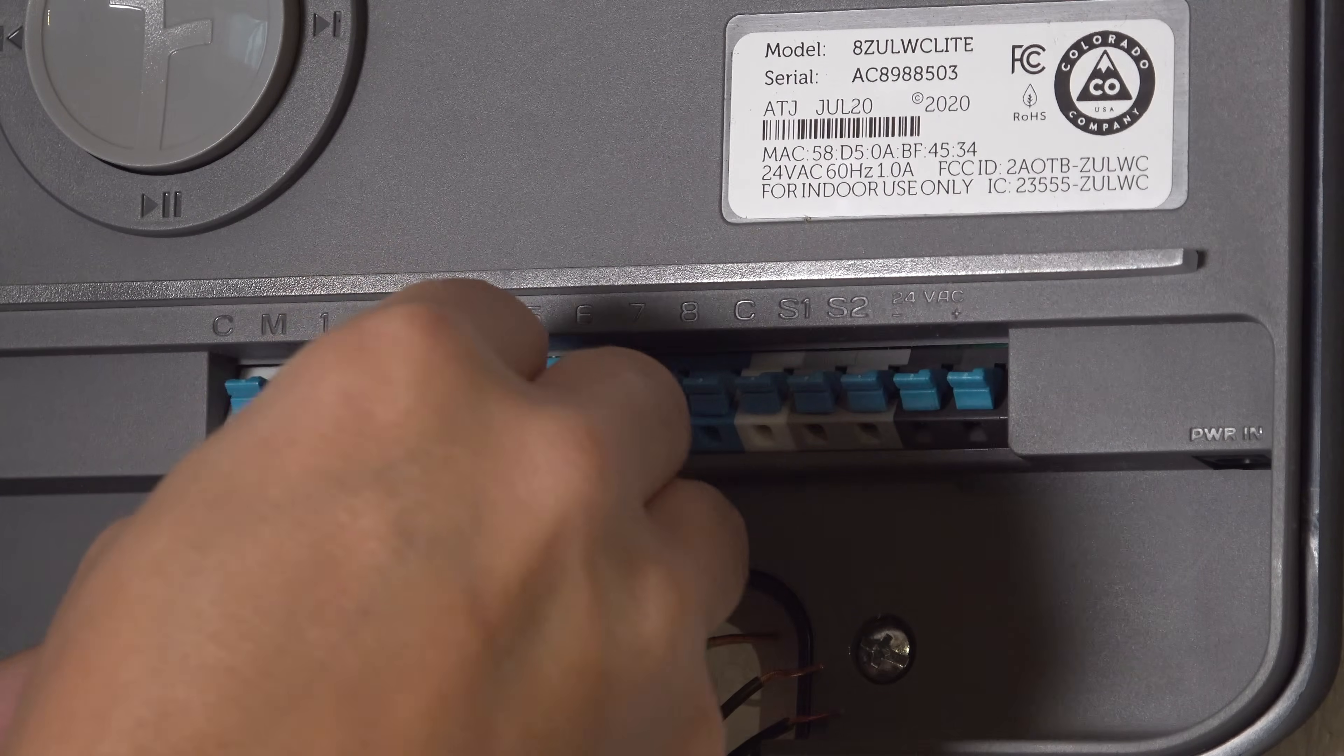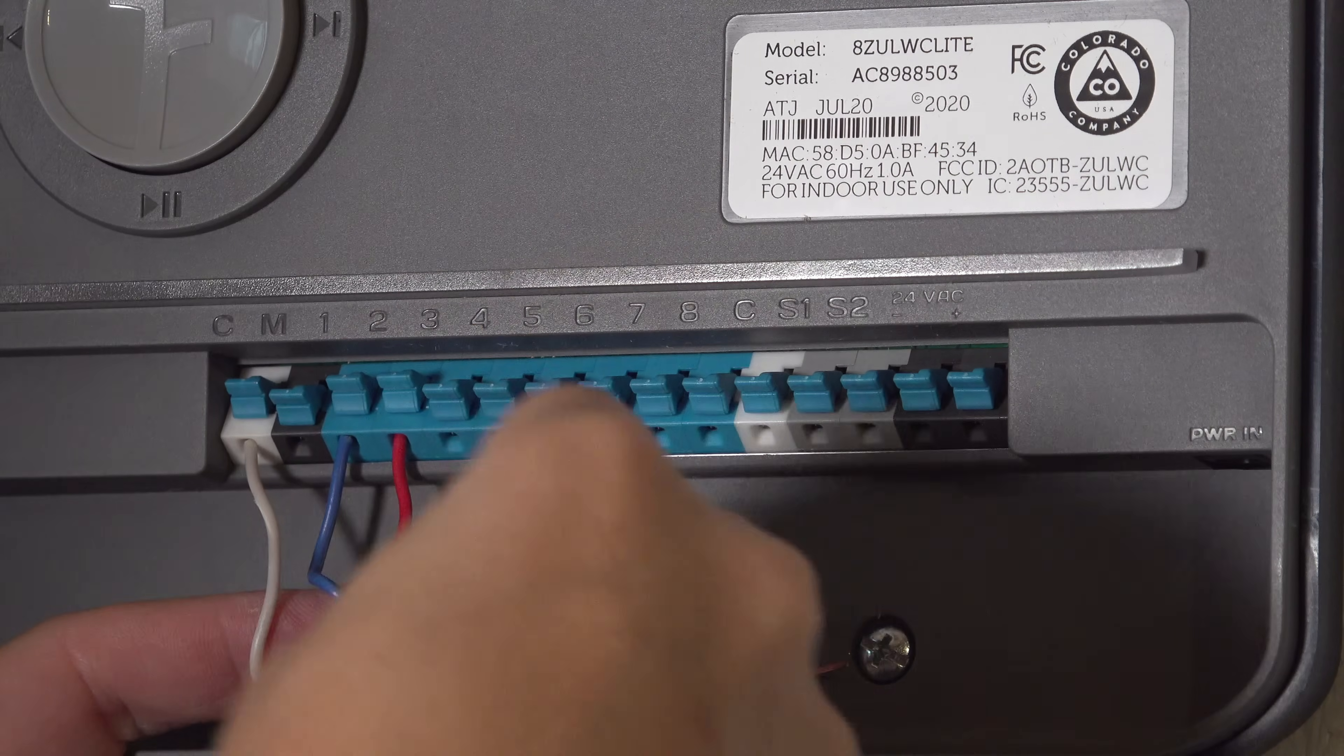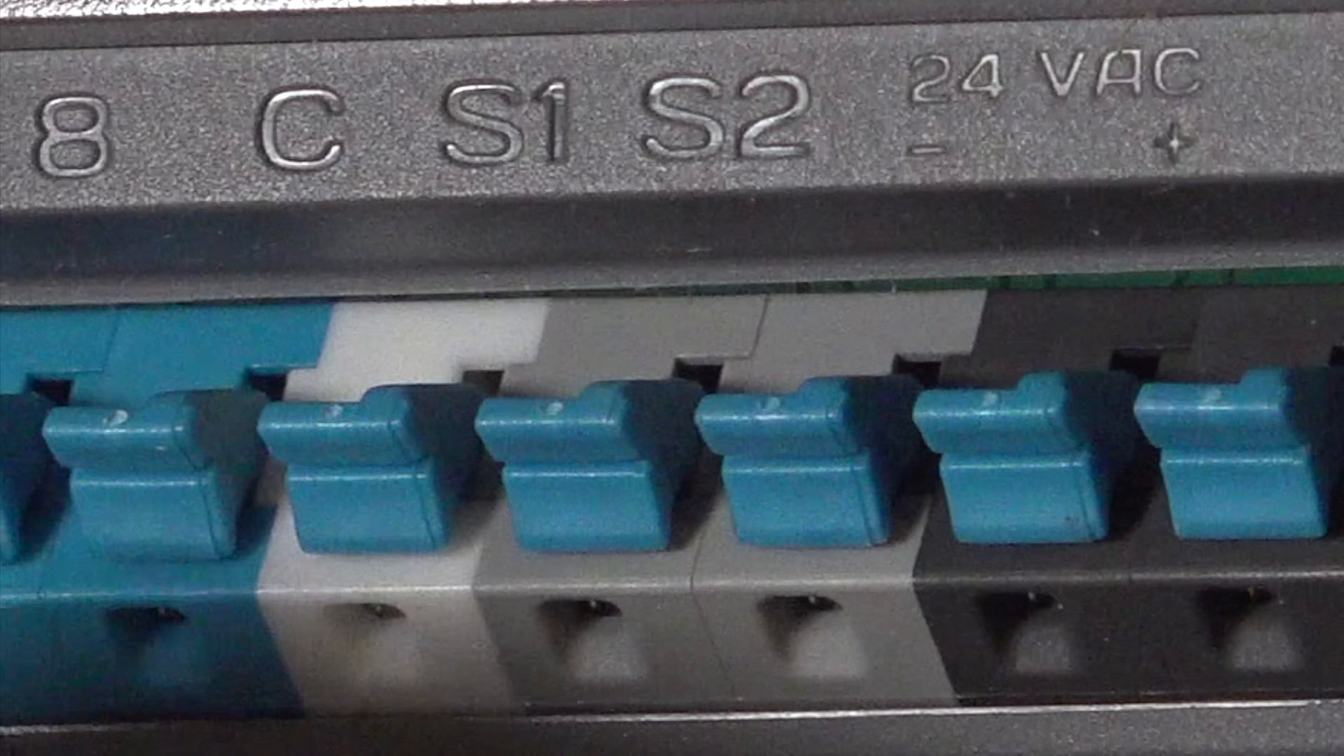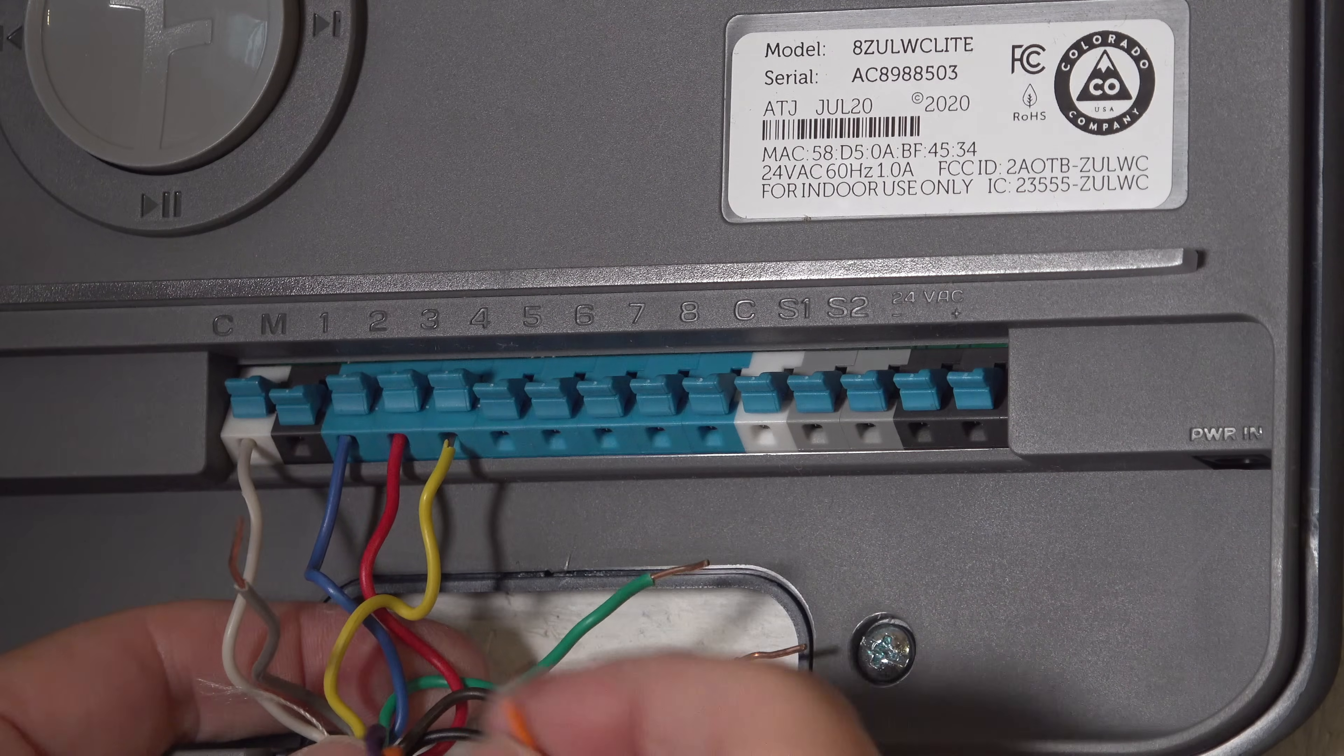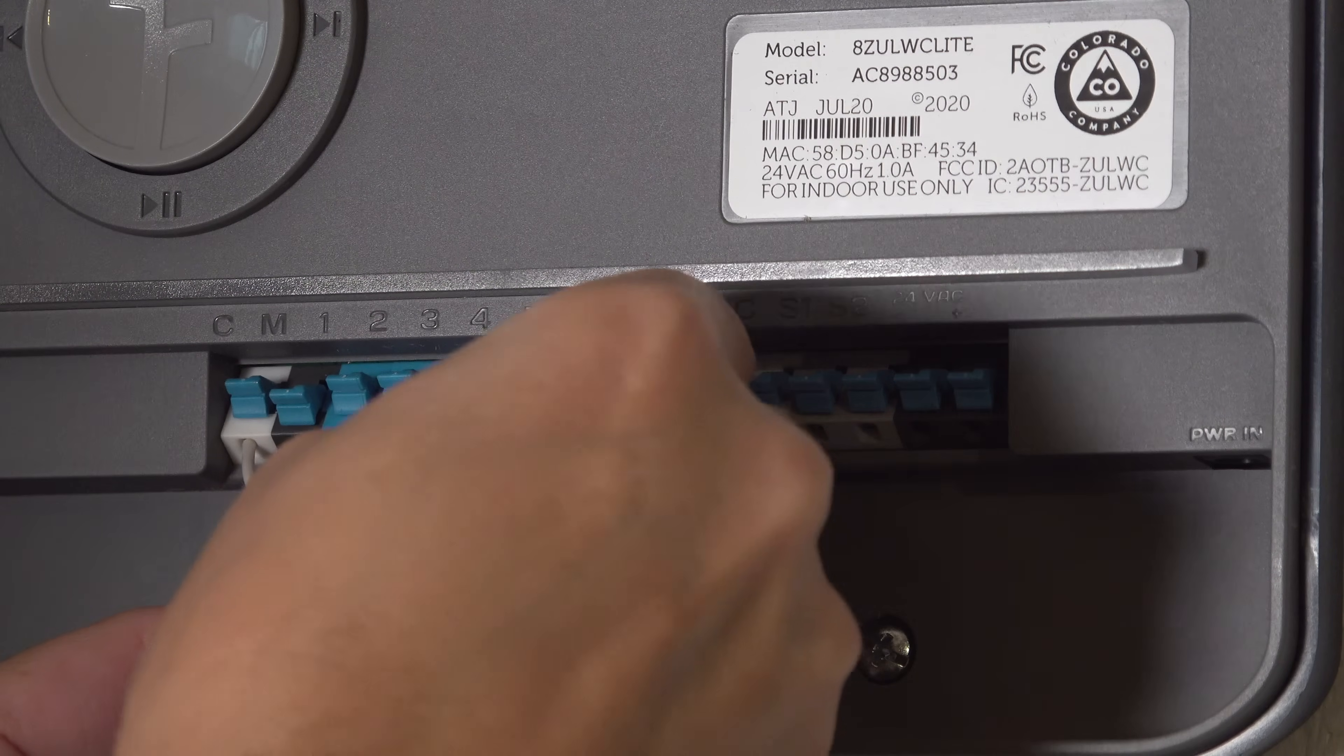You might have noticed on the old system the rain sensor wiring was just labeled with S. On this one it's labeled S1 and 2. There's no polarity on a rain sensor so you can actually use either of the wires in either position.